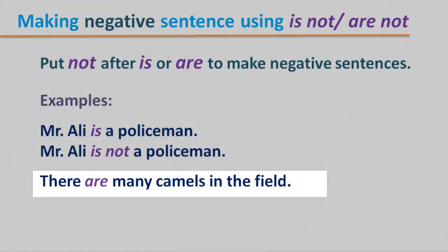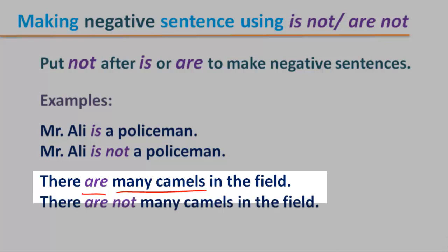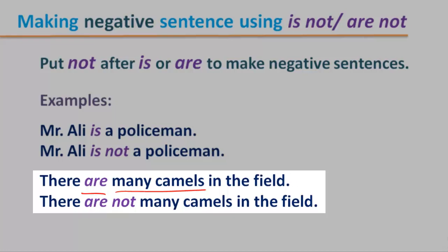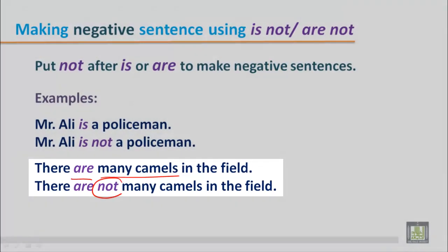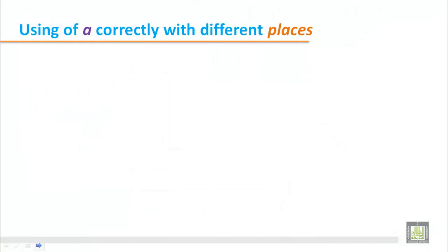There are many camels in the field. As it is a plural number — camels — we use 'are'. And when we make it negative, we use 'are not': There are not many camels in the field. We just add 'not' after 'are'.